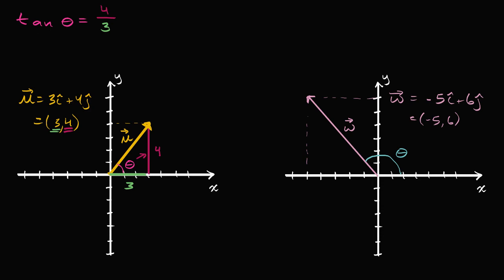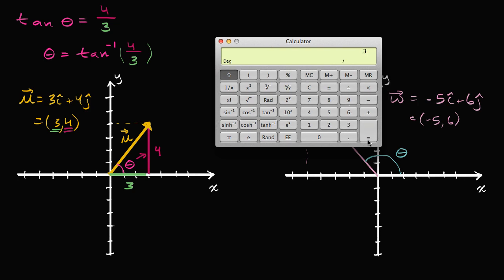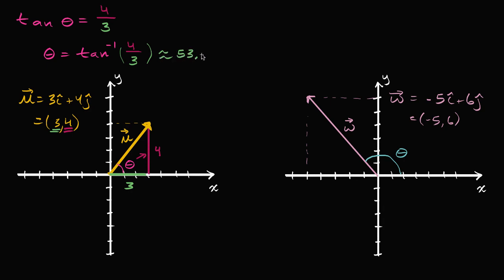To solve for theta, we take the inverse tangent — sometimes called arctangent — of four-thirds. Using a calculator: four divided by three, then inverse tangent, gives roughly 53.1 degrees. So theta is approximately 53.1 degrees. That looks about right — even though the drawing is hand-drawn, the angle looks a little more than 45 degrees, so that feels correct.